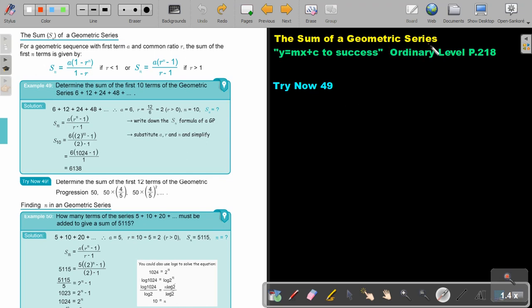The sum of a geometric series. You will find this on page 218 in the Namibia Ordinary Level Mathematics textbook 'y equals mx plus c to success'. For a geometric sequence with first term a and common ratio r, the sum of the n terms is given by a in a bracket 1 minus r to the power n, divided by 1 minus r. That is if r is smaller than 1.